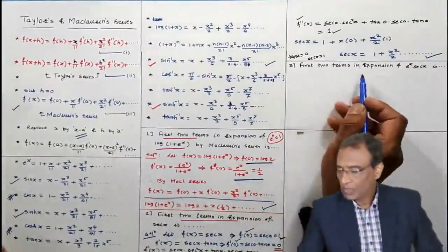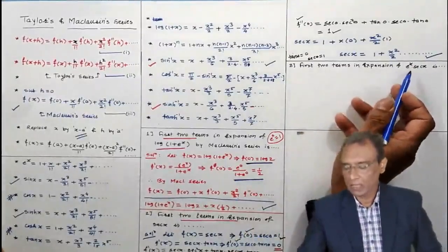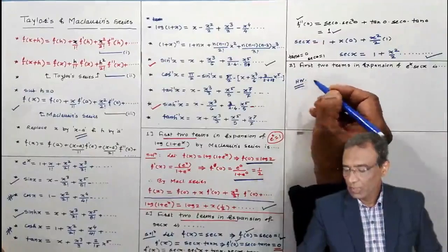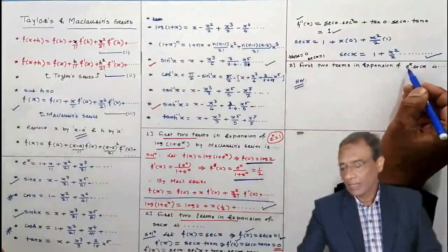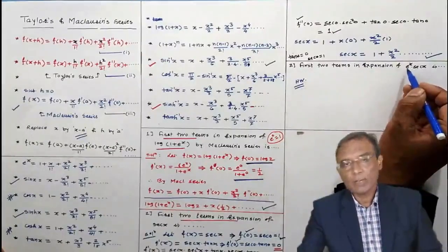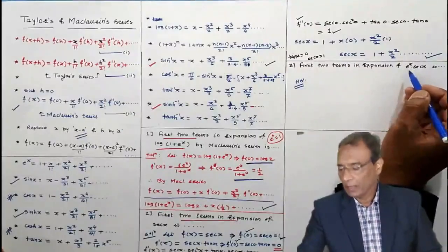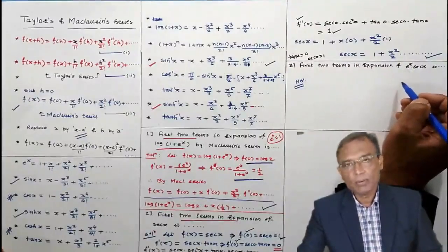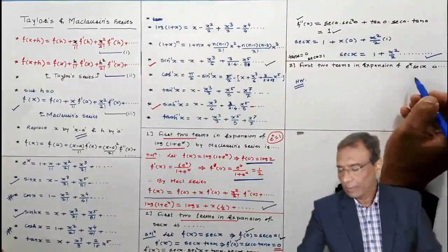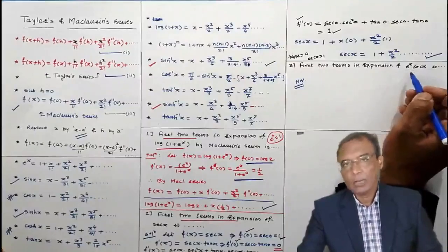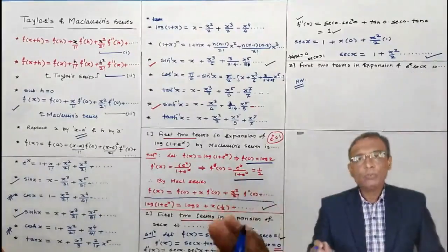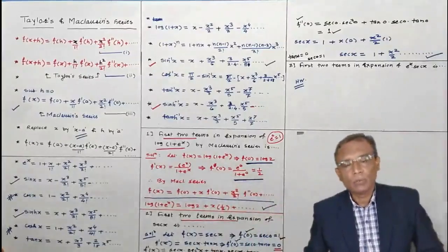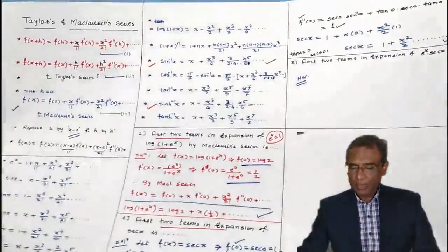Problem 3 (for you): First two terms in the expansion of e^x · sec x. Denote it by f(x). Take its derivative, find f(0), f'(0), f''(0). If the first two values of f are non-zero, stop taking derivatives.